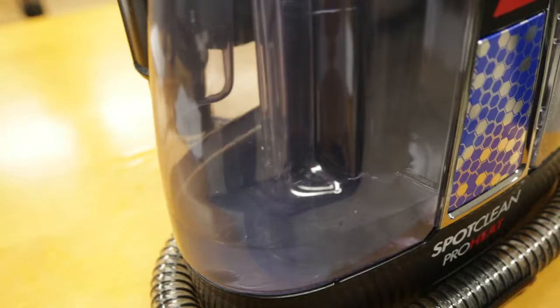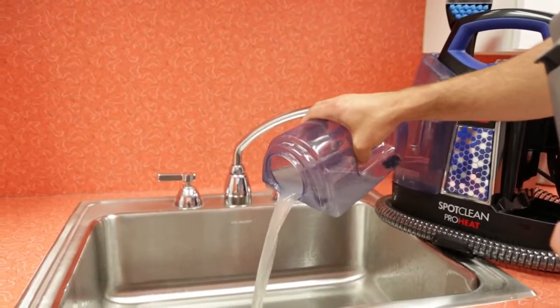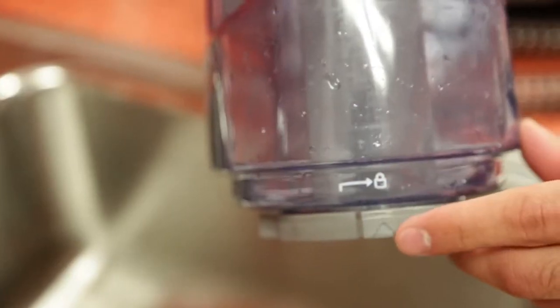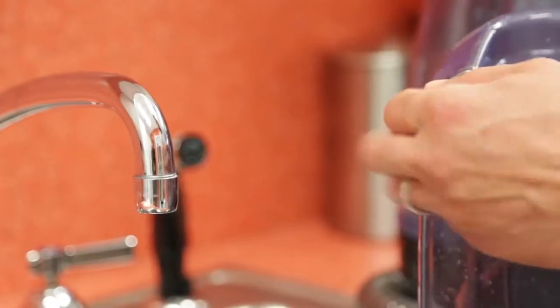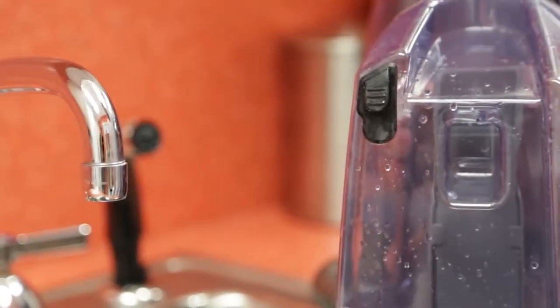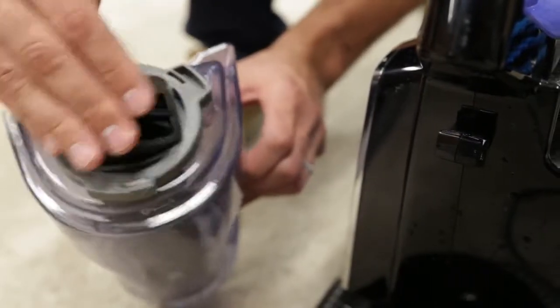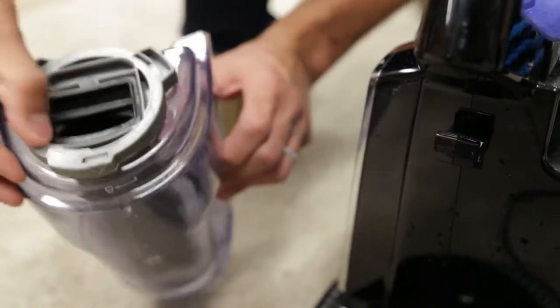The dirty water tank may be full. Empty the dirty water tank and make sure the float stack is securely locked in place with the arrow lined up to the lock symbol. Make sure the dirty water tank plug is firmly in place on top and the black duckbill gasket is in place on the bottom before replacing the tank.